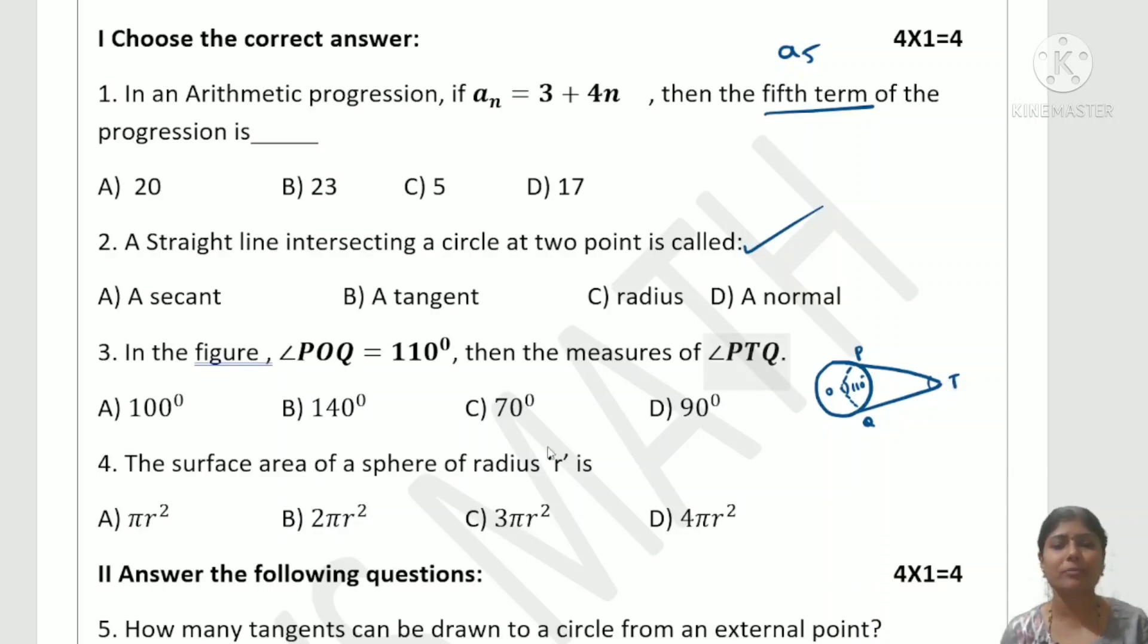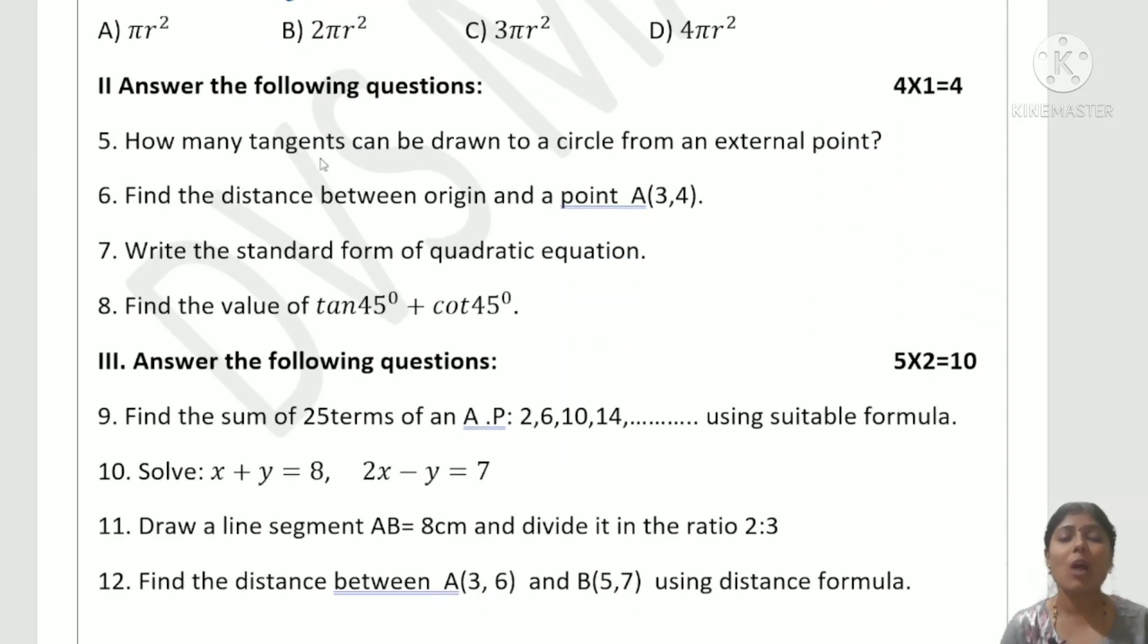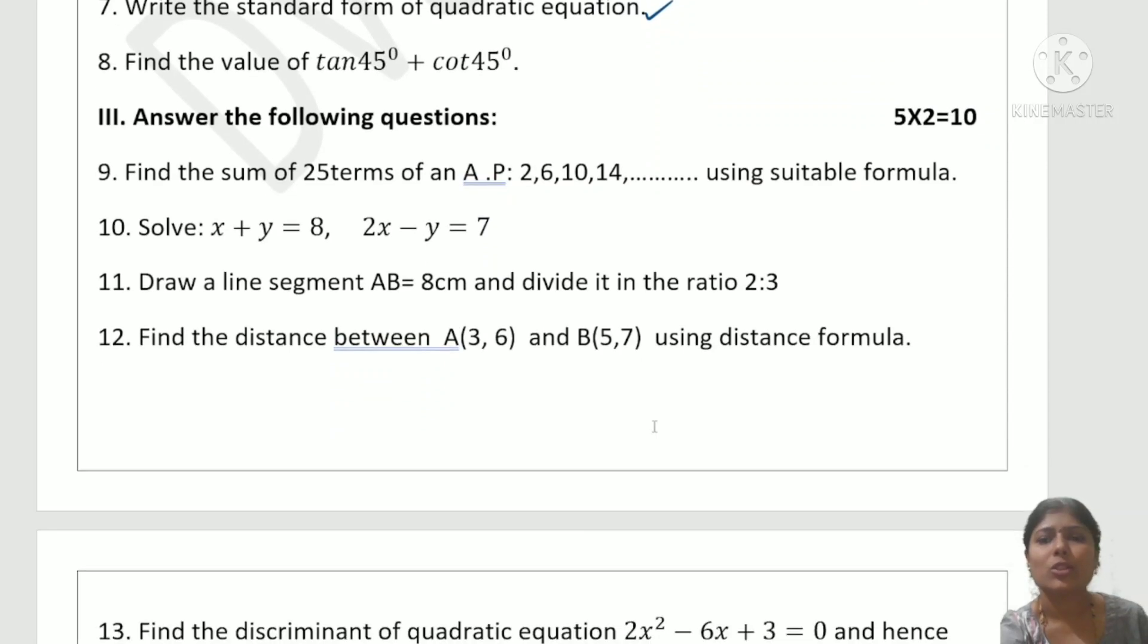Next is angle PTQ. Then there's a question about the surface area of a sphere of radius r. These are 4 MCQ questions out of 8. Next are 1-mark questions: How many tangents can be drawn to a circle from an external point? Find the distance between the origin and point (3,4). Write the standard form of quadratic equation. Find the value of tan 45° + cot 45°.